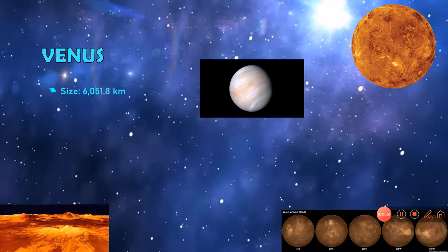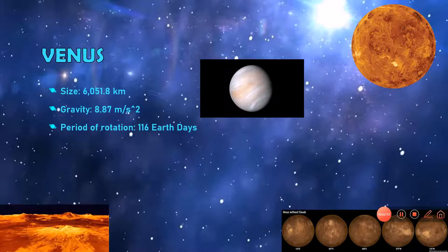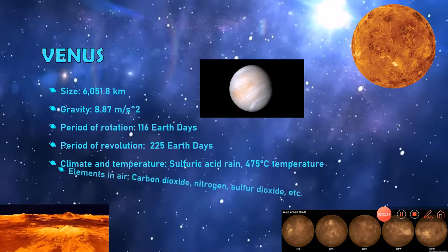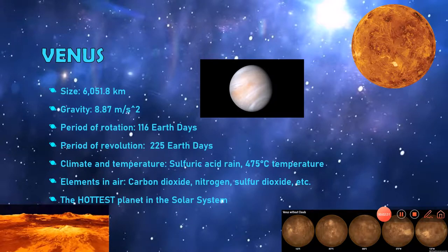Venus. Venus's size is 6,051.8 kilometers. It has a gravity of 8.87 meters per second squared. The period of rotation is only 116 Earth days. The period of revolution is 225 Earth days. Climate and temperature: sulfuric acid rain, 475 Celsius temperature. Elements in air: carbon dioxide, nitrogen, sulfur dioxide, etc. It's the hottest planet in the solar system.